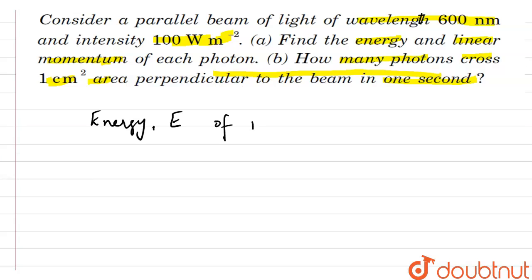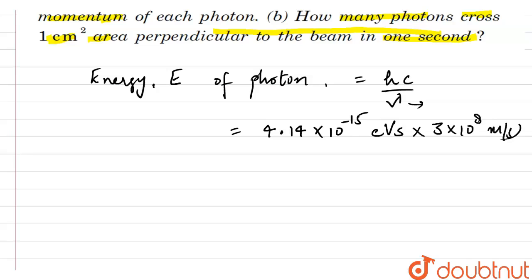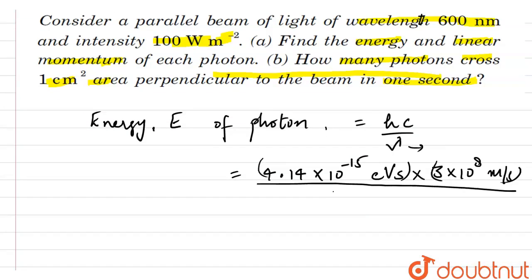We know that the energy E of a photon is equal to hc over lambda, where h is Planck's constant, c is the speed of light, and lambda is the wavelength. Planck's constant is 4.14 into 10 to the power minus 15 electron volt second, the speed of light is 3 into 10 to the power 8 meter per second, and the wavelength is 600 nanometer, or 600 into 10 to the power minus 9 meter.